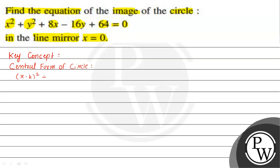In the central form, h and k represent the center of the circle, and r is the radius of the circle. We will use this concept to solve this question.